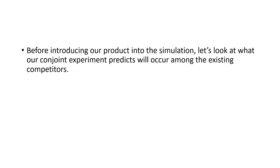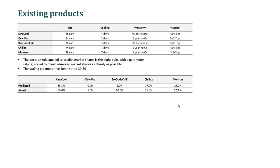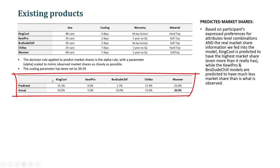Before we consider introducing our new hypothetical products into the market, let's look at what our conjoint experiment predicts will occur amongst the existing competitors. Let's see if the actual market share information of these five brands maps onto what our model predicts based on people's parts worth. According to our predicted model, King Cool should have about a 55.3% market share, but in reality they only have a 50% market share.